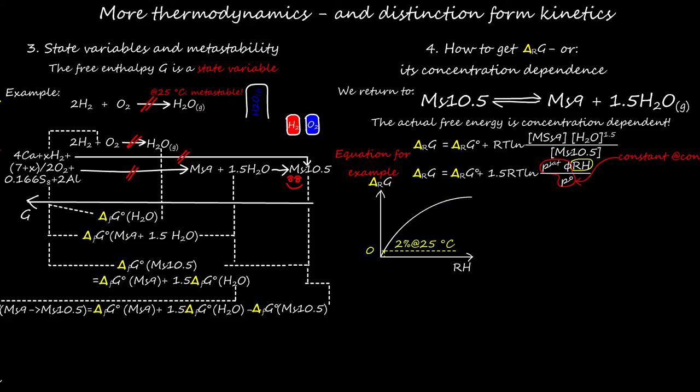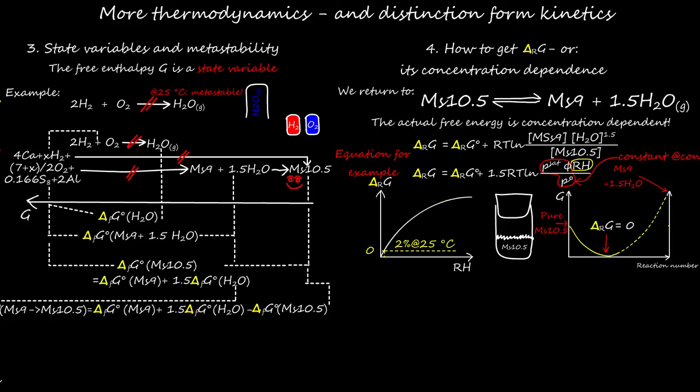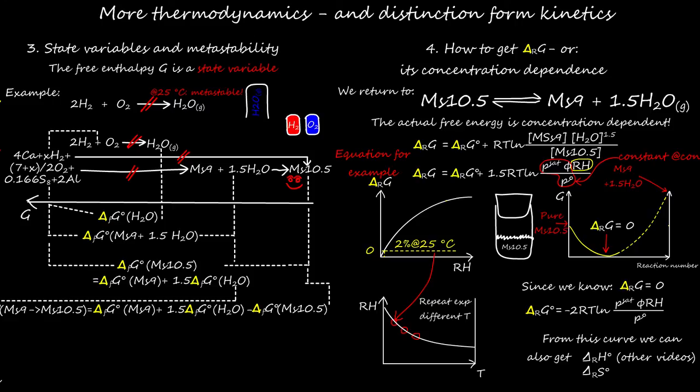More practical, consider a test tube filled with pure MS10.5 in dry air. We now plot the free enthalpy of the total system versus the reaction number. This is just the fraction of MS10.5 consumed. Initially, we are here. However, with time, MS10.5 decomposes and reduces the free energy of the system till delta RG becomes zero. By repeating this experiment at different temperatures, we can plot a diagram like this, which most people will recognize as a phase diagram relative humidity versus temperature. Since we know that at equilibrium, delta RG equals zero, we can now calculate the standard free reaction enthalpy from the equilibrium moisture content. During the discussion of Lewis' work, we will see how we can obtain the enthalpy and entropy from the temperature-dependent data as well.